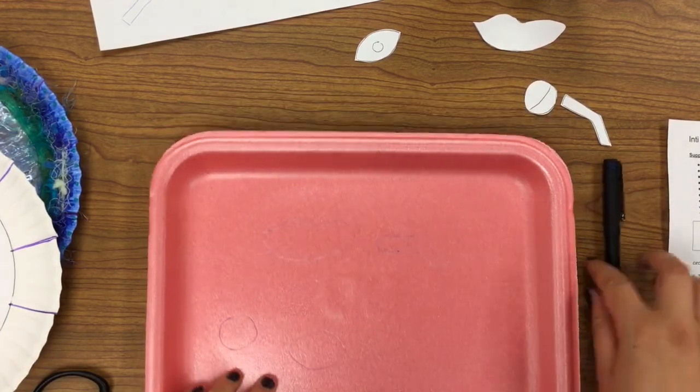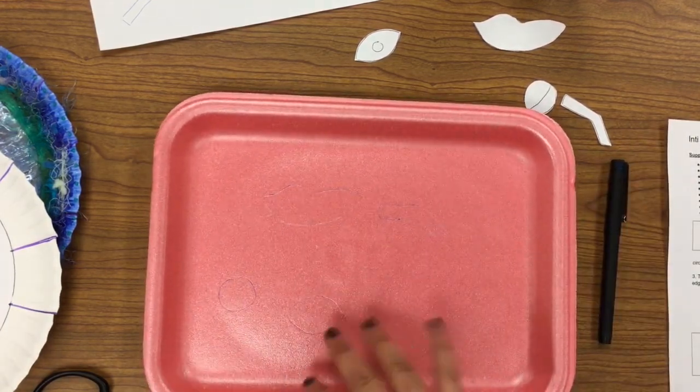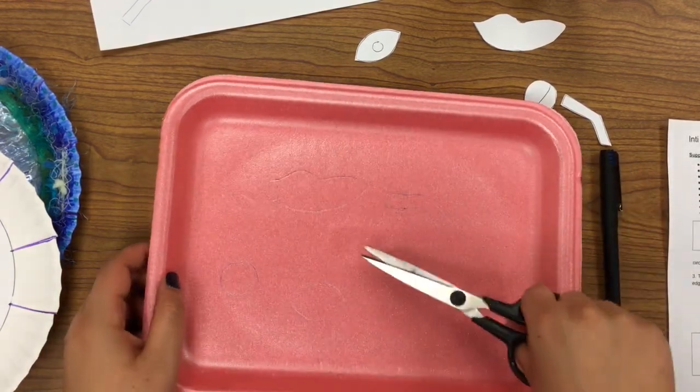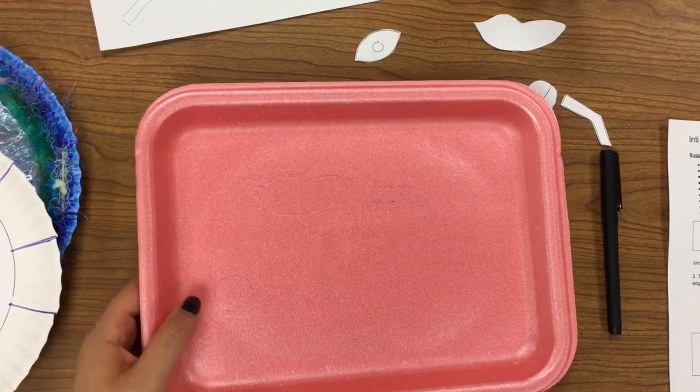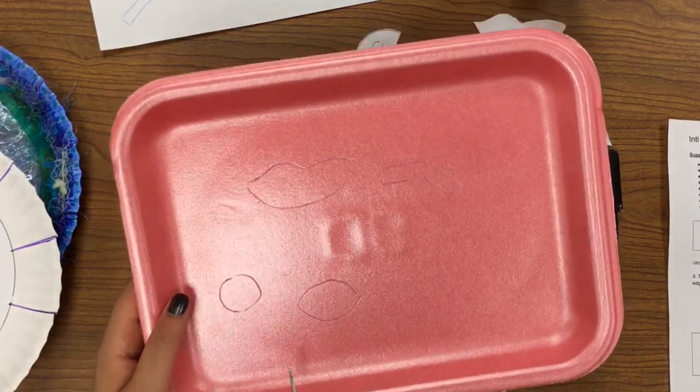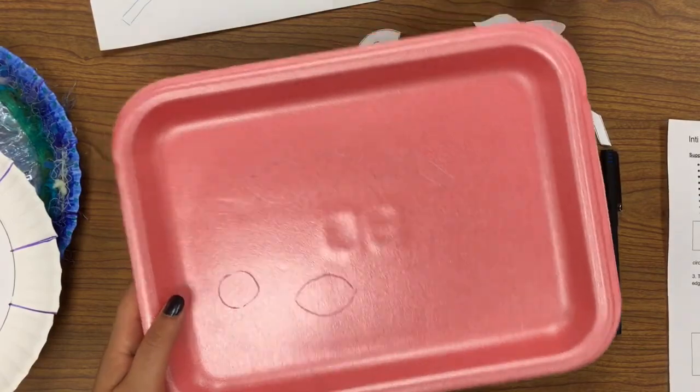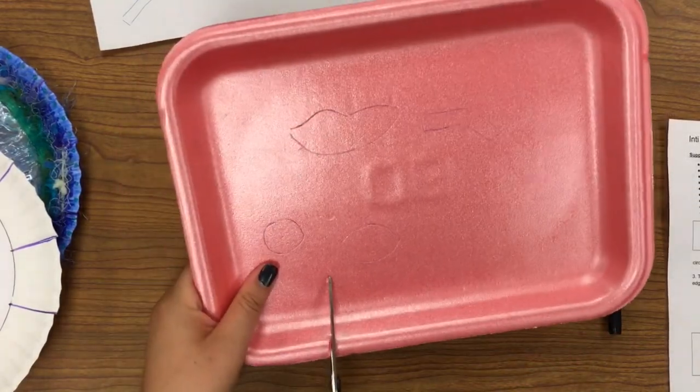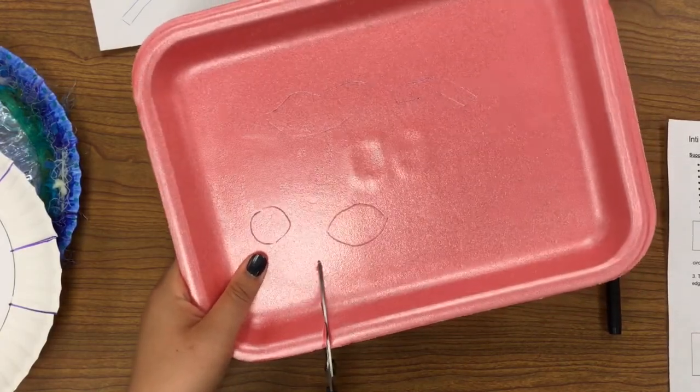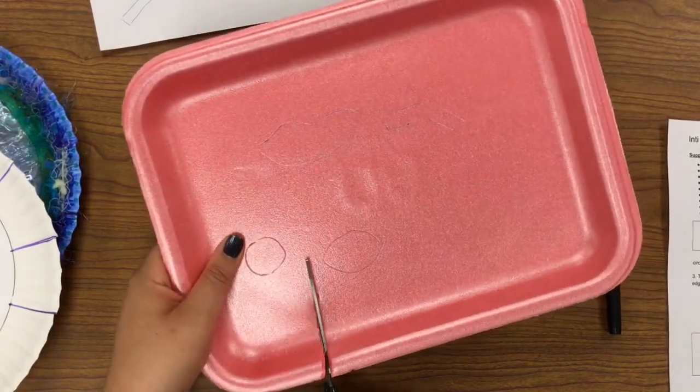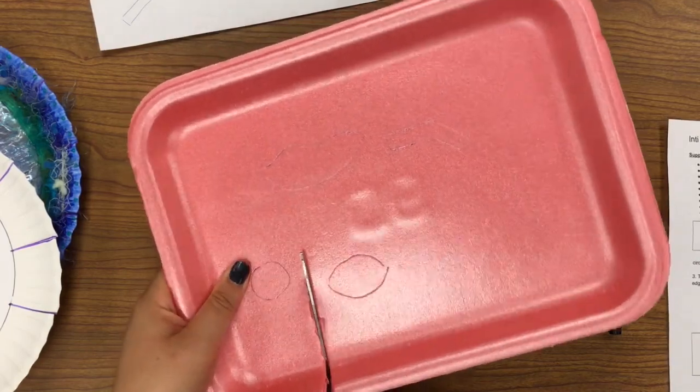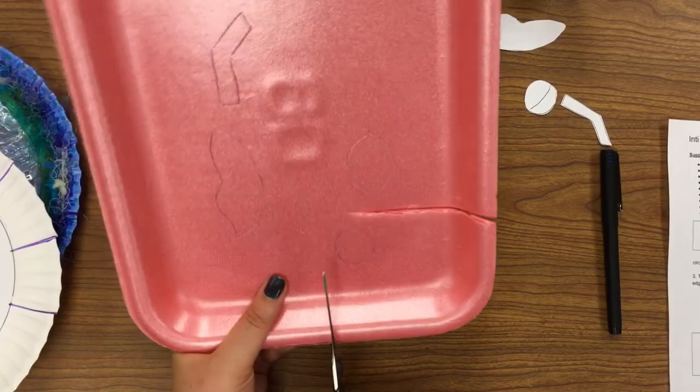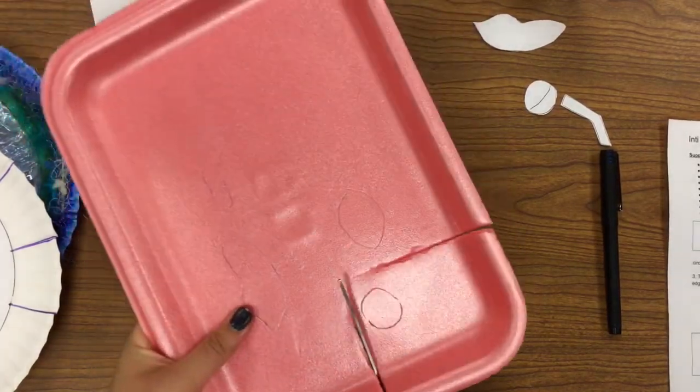Once you have your shapes all drawn, it'll be time to cut. Now, like I said, cutting this stuff is kind of hard. So first off, you want to get through this curved up edge here. So just go ahead and start cutting in. I think it's a good idea to try to cut these shapes apart, cut them off of this big tray.